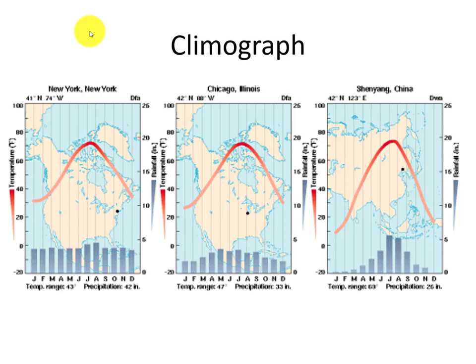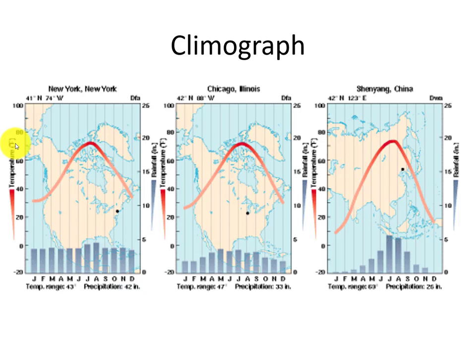Here's a comparison of three climographs — the official scientific graph used to describe and understand climate. You'll be making your own climographs in the lab. The blue bars represent precipitation and the red line represents temperature. The x-axis shows months of the year, and there are two y-axes: temperature in degrees Fahrenheit on the left, and rainfall — which technically includes rain, snow, sleet, hail, fog, and all water cycling through the water cycle — on the right.